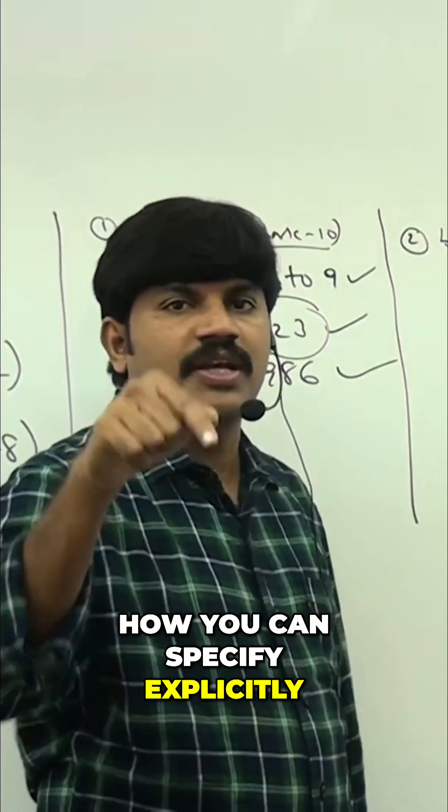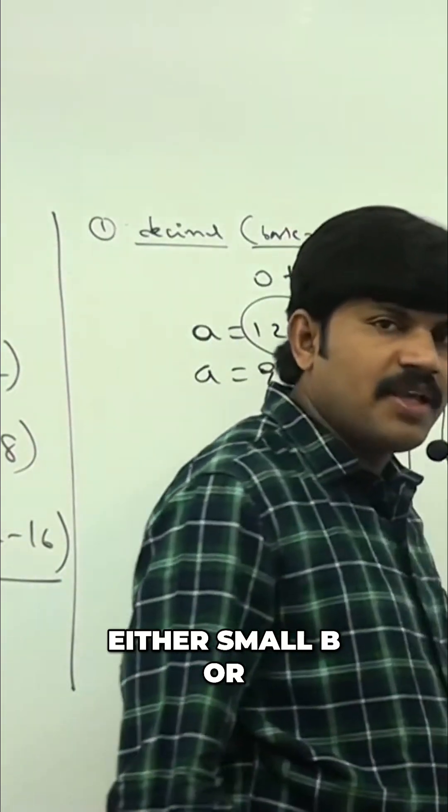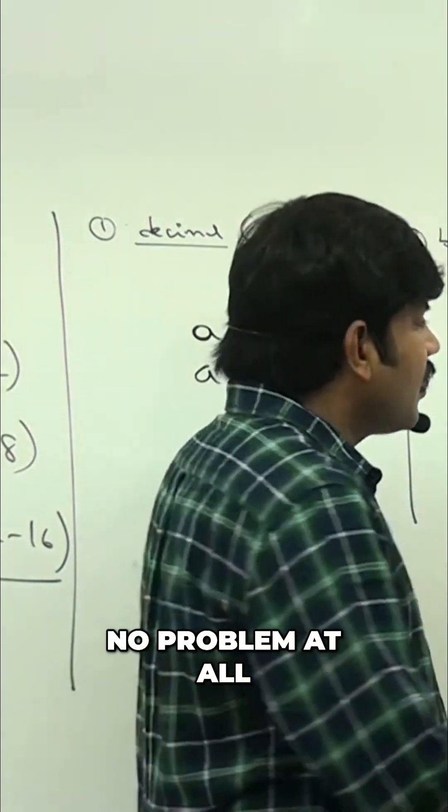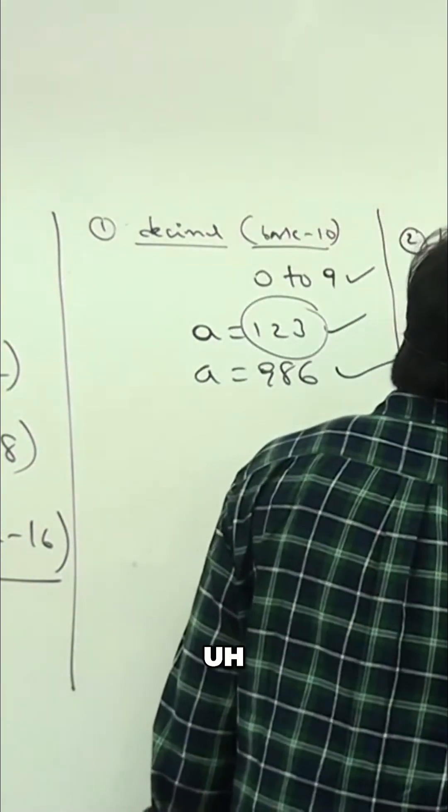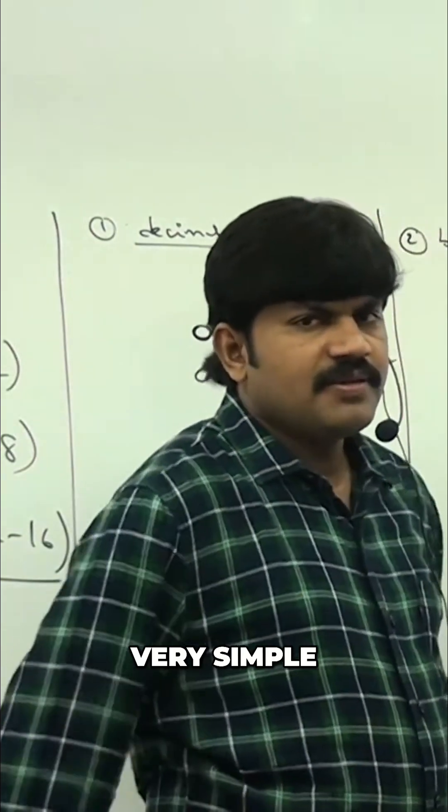How can you specify explicitly? Zero b, either small b or capital b, no problem at all. Now you can print the value. Very simple. What is the output you are going to get?